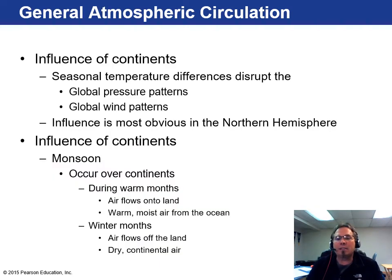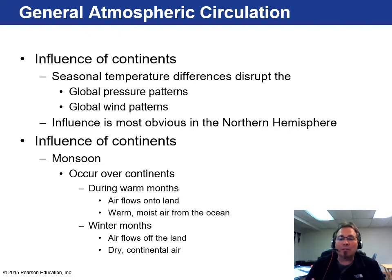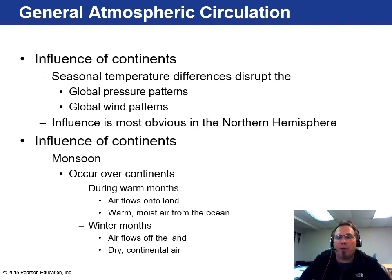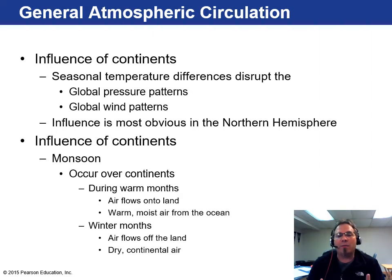Continents play a huge role in seasonal temperature differences and global pressure and wind patterns because they add friction, and features like mountain ranges and valleys affect wind. This is especially obvious in the northern hemisphere, where the bulk of Earth's land masses are located. In summer, moist ocean air flows over land creating monsoons; in winter, air flows off the land creating dry, cold continental air — which is why we get really cold, dry air in winter here.